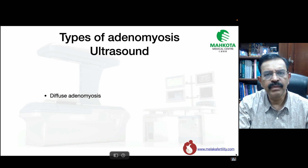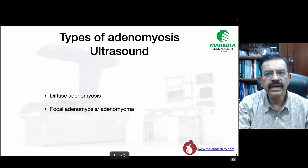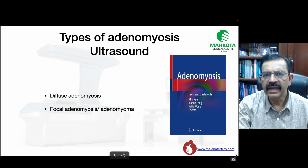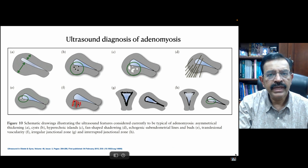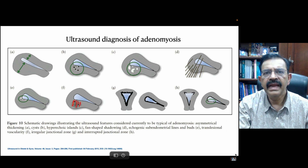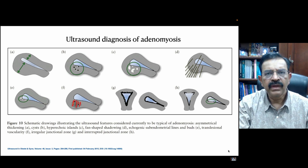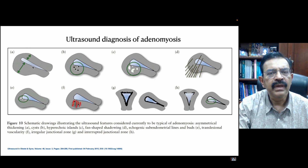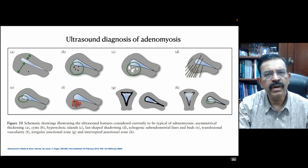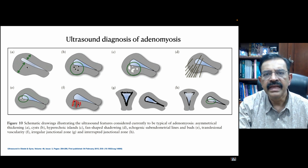Basically, there are two types of adenomyosis. The first is diffuse adenomyosis, and the second is focal adenomyosis or adenomyoma, and this is very well illustrated in a book called Adenomyosis. However, a paper published in 2015 classified adenomyosis by ultrasound into eight different types. The one we are most familiar with is where one part of the uterus wall is thicker than the other — what we call asymmetrical thickening.